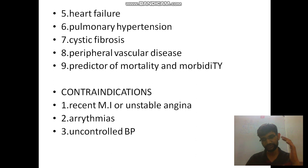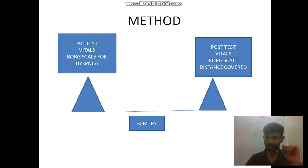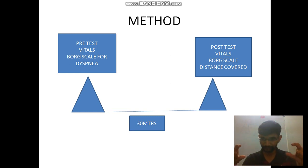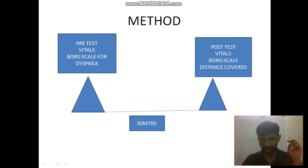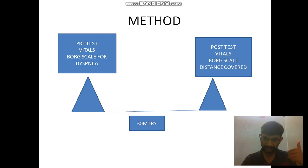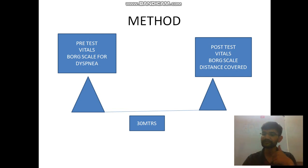Now, how do we perform the test? We need a flat, hard surface. We place two cones at a distance of 30 meters apart, marking them on the ground. We label them Cone A and Cone B. Before beginning, we routinely check vitals: heart rate, blood pressure, and oxygen saturation — these are the three major vitals.